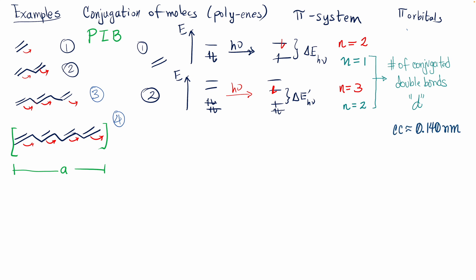We also have to consider the length of the box. We'll make the simplification that, although double bonds and single bonds differ in length, we take the average of the two. So the length of the chain — equal to the box length — is given by two times the number of double bonds minus one, multiplied by the average carbon-carbon bond length.